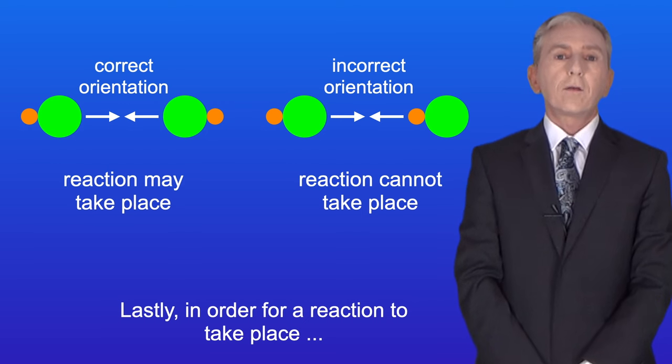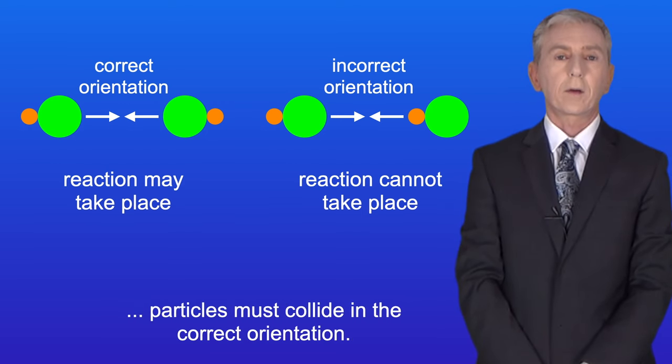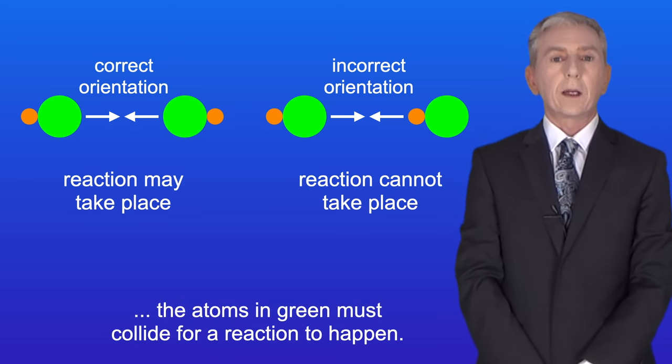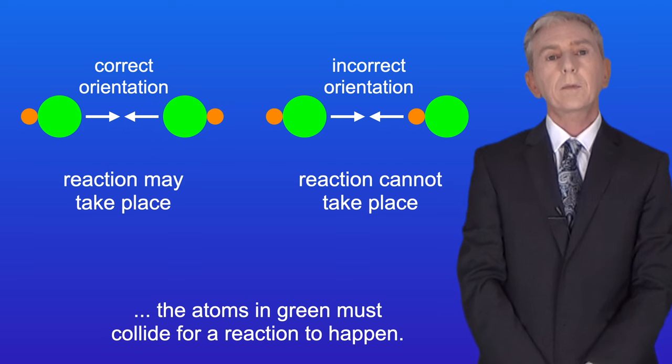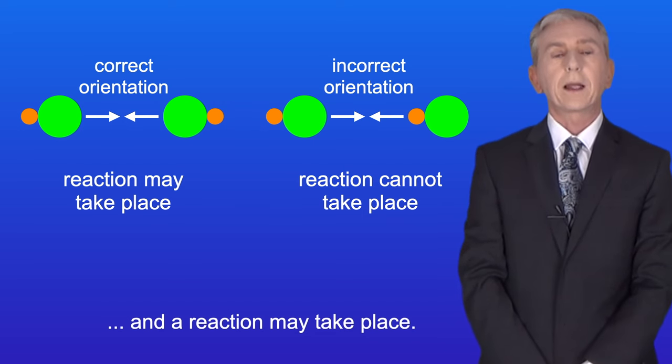Lastly, in order for a reaction to take place, particles must collide in the correct orientation. In the reaction I'm showing here, the atoms in green must collide for a reaction to happen. So in the left hand diagram, the particles are in the correct orientation and a reaction may take place.